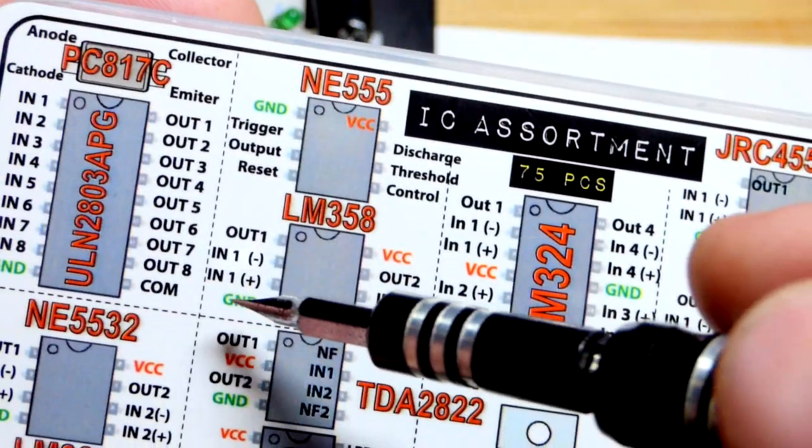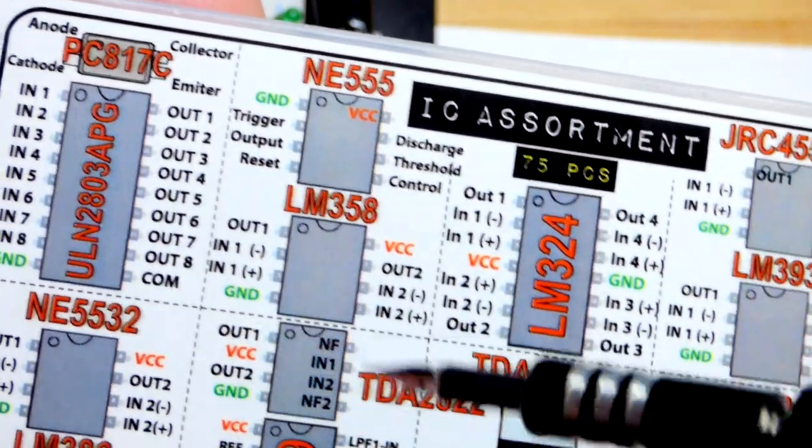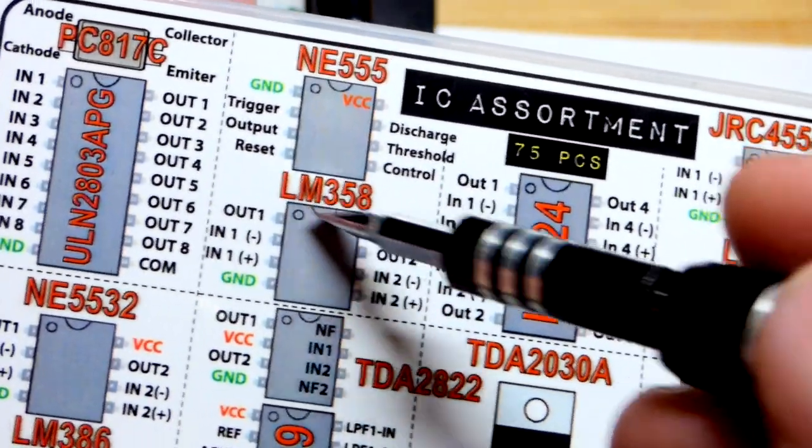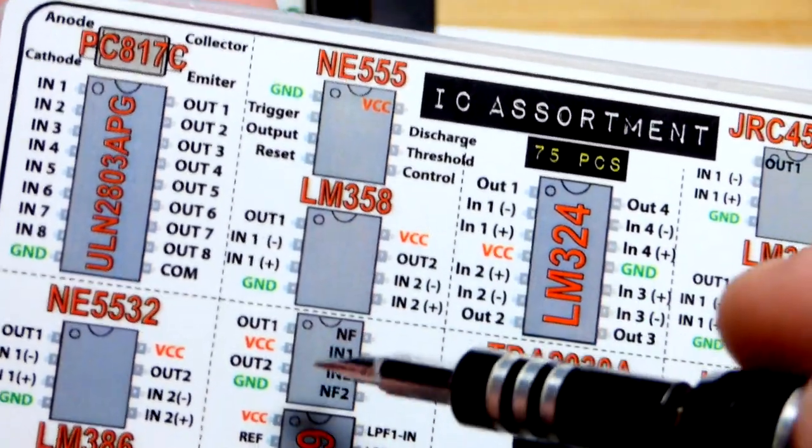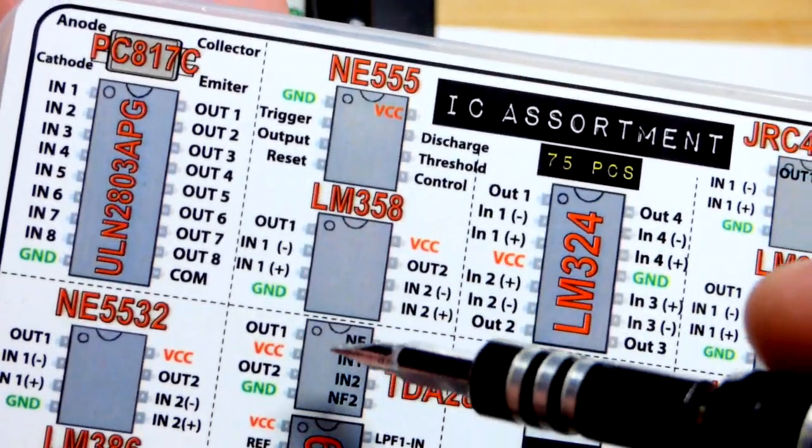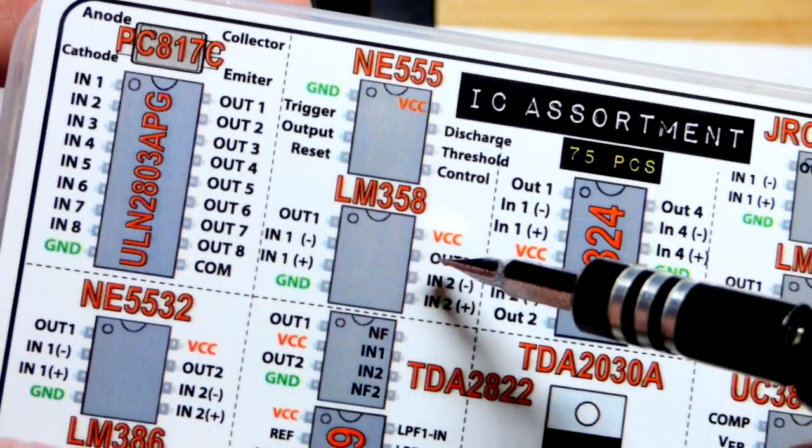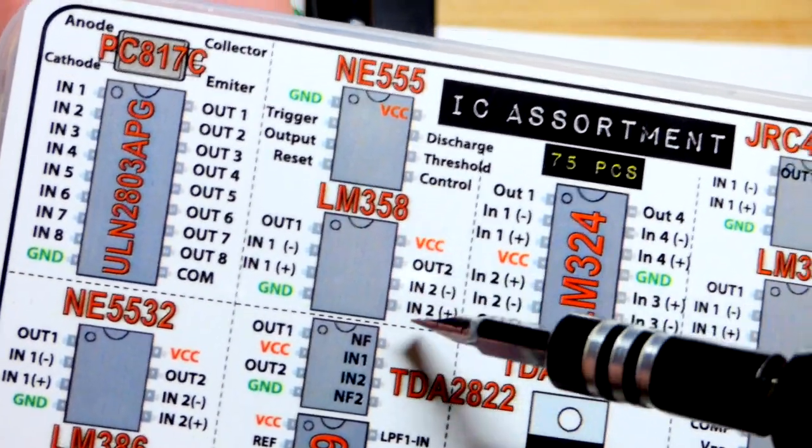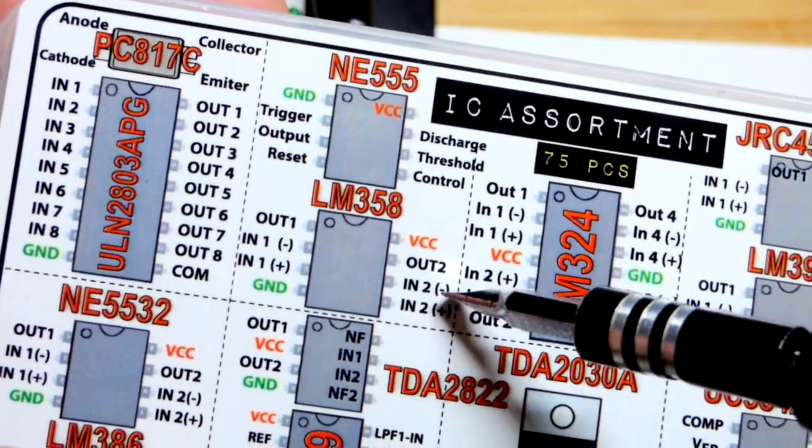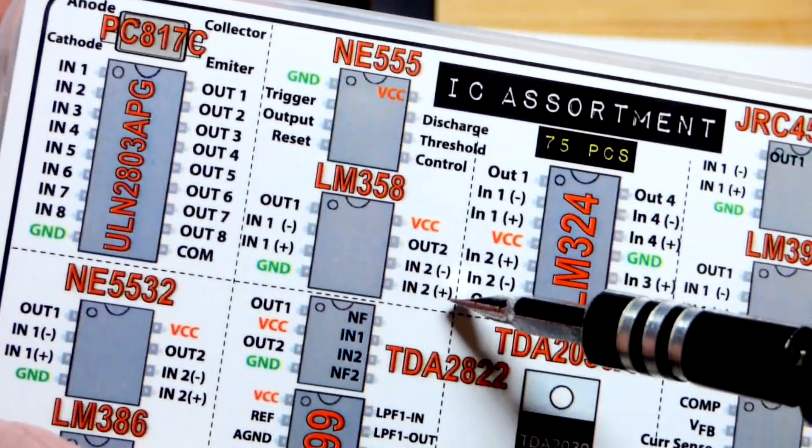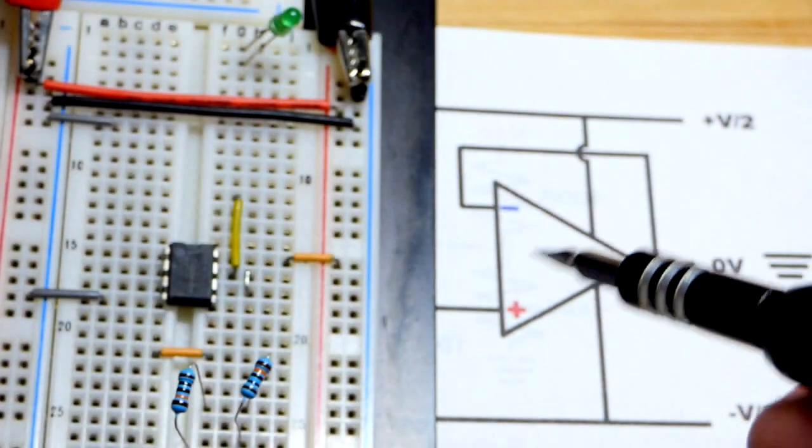We got the power pins already on there—plus on number 8 and then number 4 is the minus or ground. Even though this is a single supply op-amp, you can use it as a dual supply or split supply—you can do both. In this case we're going to split the voltage with this op-amp.